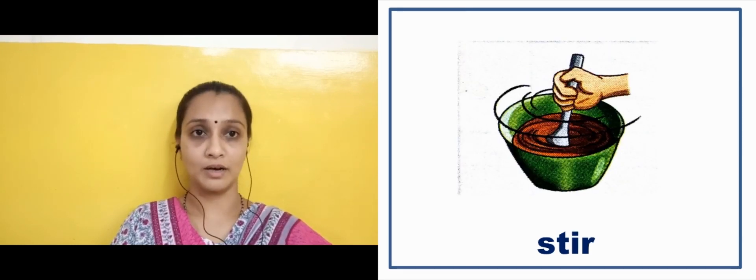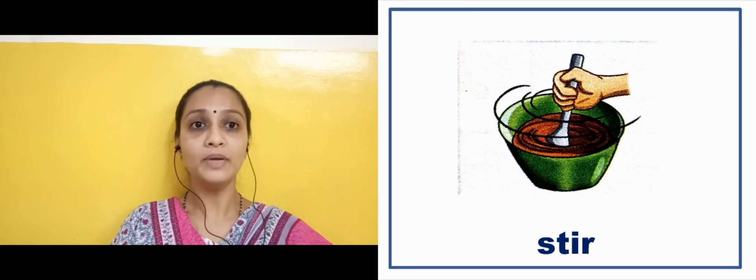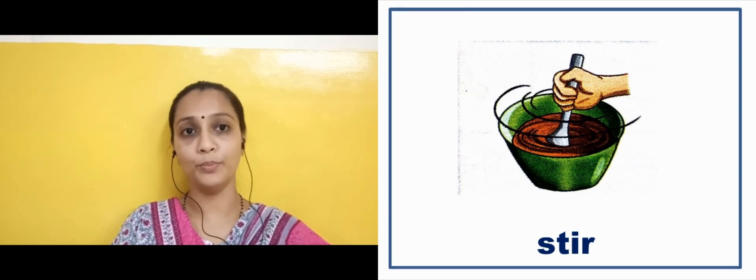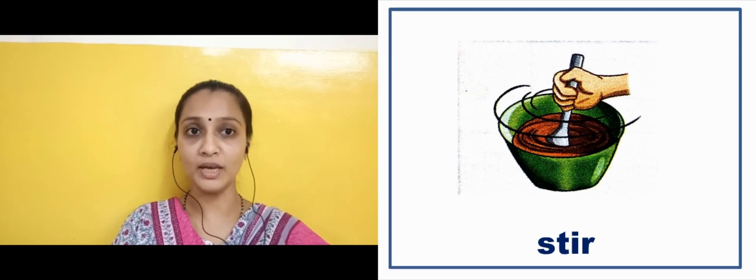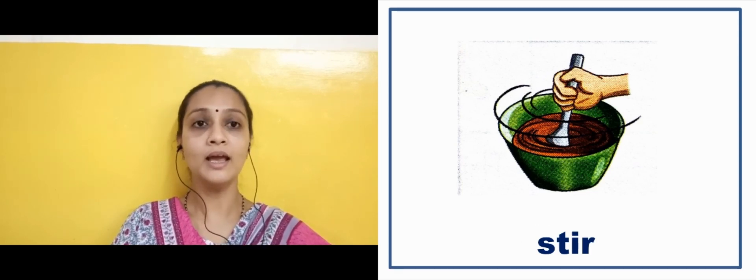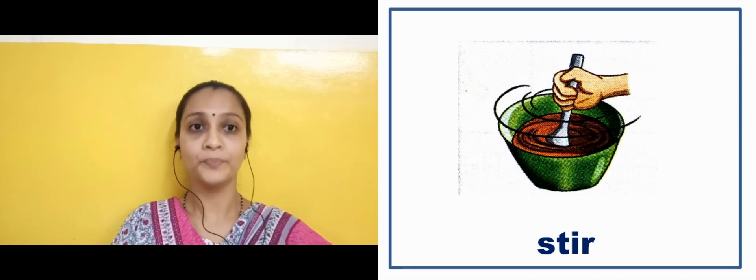Now in the next slide, here there is an image of stir. Here we are mixing the liquid with the help of a spoon — yahaan peh ek coffee hai jis ko spoon se hila ke mix kar raha hai. That is called stir. Now, here there is an image of stick. S-T-I-C-K. Yahaan peh ek stick dekh sakte ho — lakdi hai, jis ka support se hum chal sakte hai. Stick means lakdi.